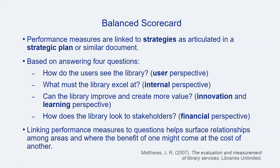Another method central to assessment is the balanced scorecard approach. A balanced scorecard links performance measures to strategies, usually in a strategic plan or similar document. In general, a balanced scorecard is focused on four or more perspectives: a user perspective focused on how users view the library, an internal perspective centered on library excellence, an innovation or learning perspective focused on what the library can do to improve and create additional value for users, and a financial perspective. Connecting performance measures to these perspectives helps surface choices and balances among various areas within the library.